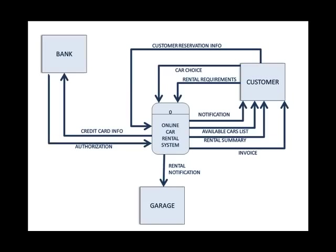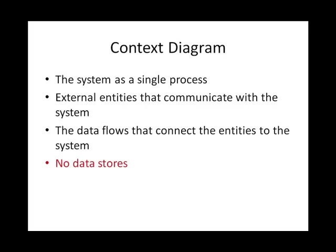Another scenario: if the credit card was declined, you still get an authorization — you don't delete any of the arrows because they are a possibility. However, there needs to be an extra arrow, a data flow which is a notification to the customer saying the credit card was declined — maybe enter another card or try again. At this point we finish the context diagram. In summary, it's a diagram that represents the system as one single process, usually drawn in the middle, with external entities on the edges connected by data flows, and the arrows must not cross each other.